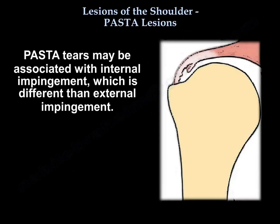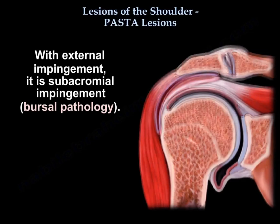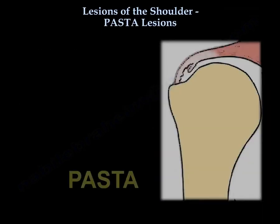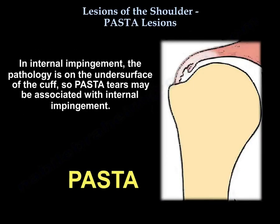PASTA may be associated with internal impingement, which is different from external impingement. In external impingement, it is subacromial impingement with bursal pathology. In internal impingement, the pathology is on the undersurface of the cuff. So PASTA may be associated with internal impingement.